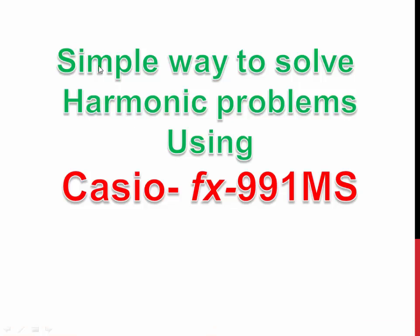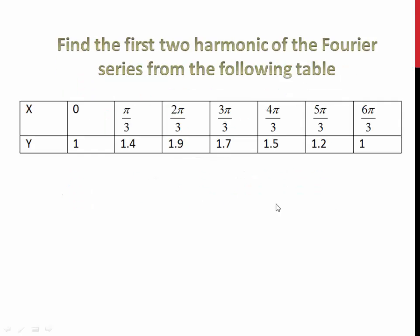Hi friends, it is a simple way to solve harmonic problems using your calculator Casio FX991 MS. This is the problem given to you. Find the first two harmonic of the Fourier series from the following table.